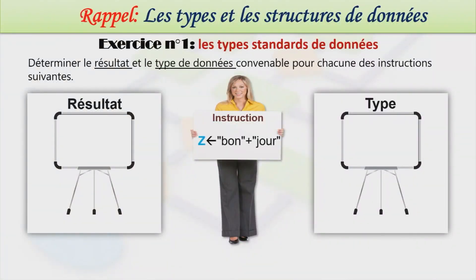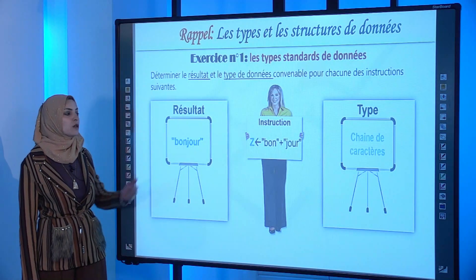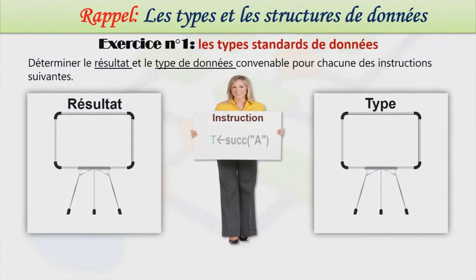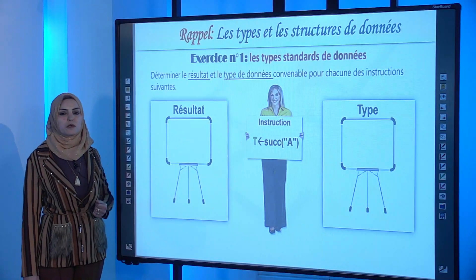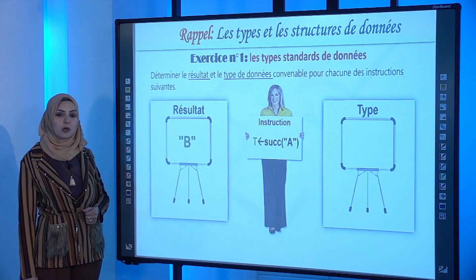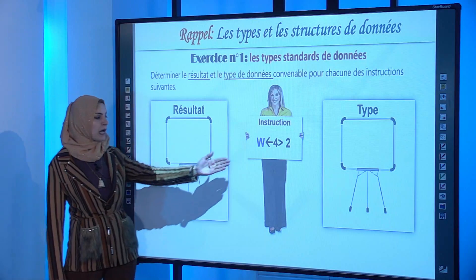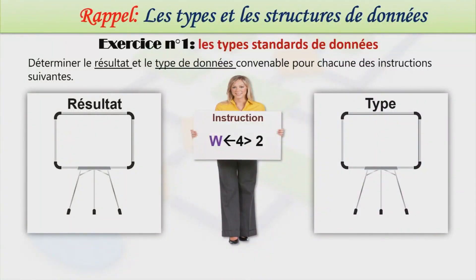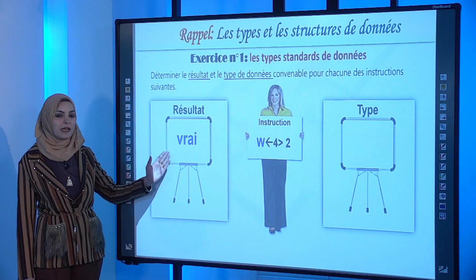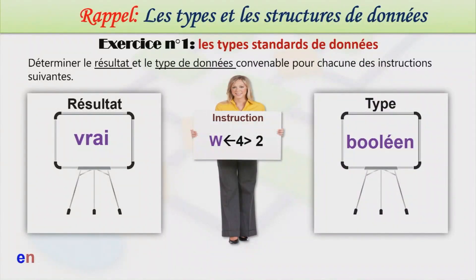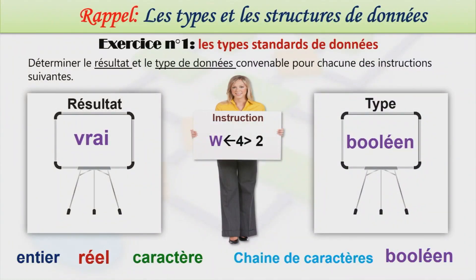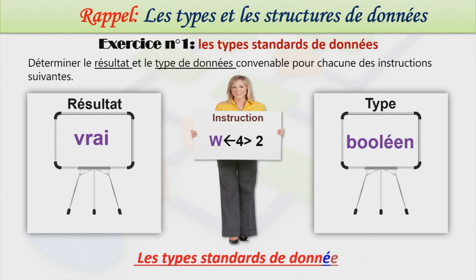L'instruction Z reçoit la concaténation des chaînes « bon » et « jour » donne la chaîne « bonjour », donc de type chaîne de caractère. L'instruction T reçoit le successeur du caractère A, qui est le caractère B, donc de type caractère. L'instruction W reçoit « 4 supérieur à 2 » donne la valeur logique vraie, de type booléen. Les cinq types standards sont donc : entier, réel, caractère, chaîne de caractère et booléen.